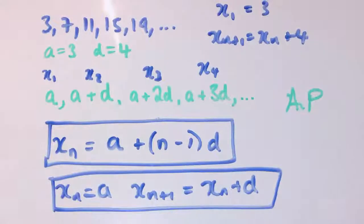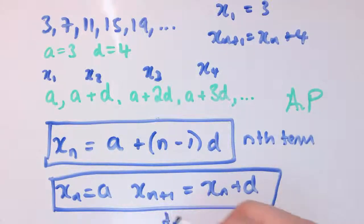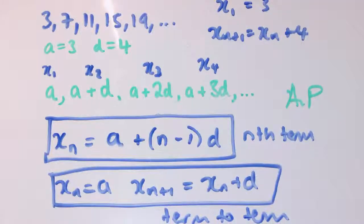There we go. That's the two different types of examples there for the nth term definition and the term-to-term definition of an arithmetic progression.